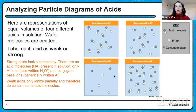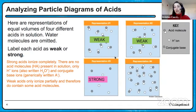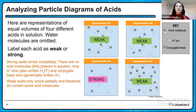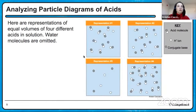Weak acids only ionize partially, so you're going to have some undissociated acid molecules in solution. Based on that, representations one, two, and four are weak because they have the undissociated molecules — the gray circle paired with the white circle. Whereas representation three has only ions, only the dissociated form of the acid, so that is a strong acid.